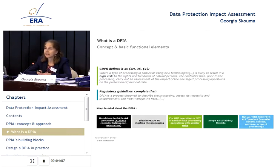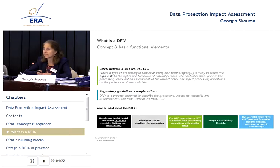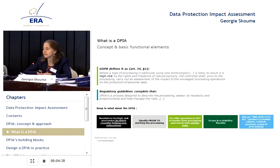In guidelines that followed the regulation — for instance, the CNIL guideline — we have a much sharper definition of the DPIA, where it is characterized as a process designed to describe the processing, to assess the necessity and proportionality of a processing operation, and to help manage the risks. Similar definitions you will find in more or less all the guidelines now available through regulatory bodies in your countries.